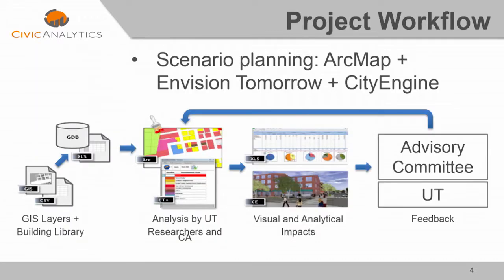The workflow for our project was essentially like this. We started with a big library of Central Texas-type buildings, threw in some GIS data, and ran Envision Tomorrow, which is a scenario planning software. Then depending on the visual and analytical results, we would send that to UT professors who are our analytics experts, and we would send it to the advisory committee who are our neighborhood experts, and they would tell us whether our development decisions made sense, whether they didn't make sense, why or why not.